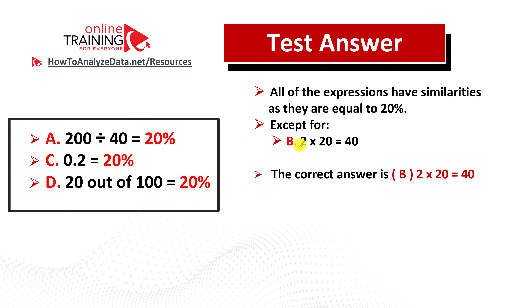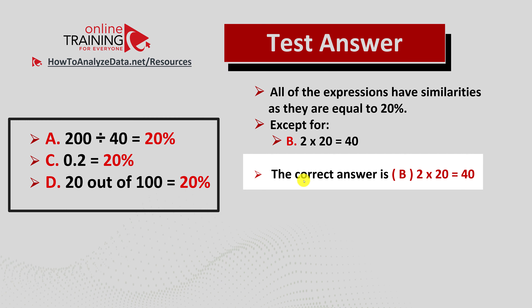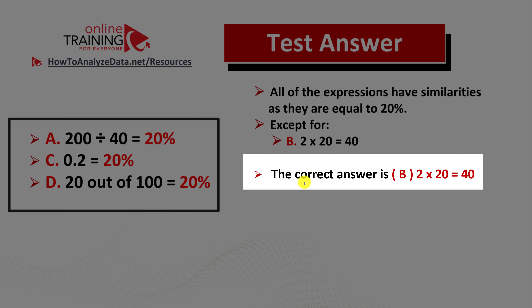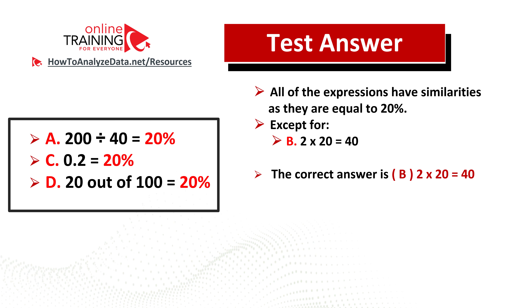In choice B, 2 multiplied by 20 equals 40, which is different from the 20% answer identified for items A, C, and D. So the correct answer is choice B. Hopefully you've nailed this question and now know how to answer similar problems on the test.